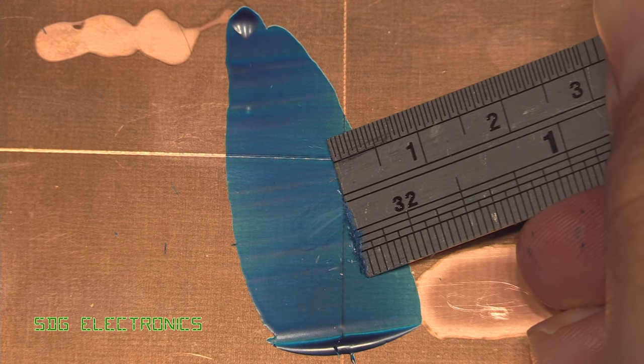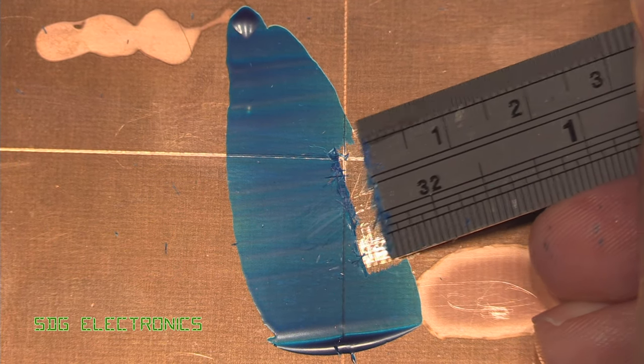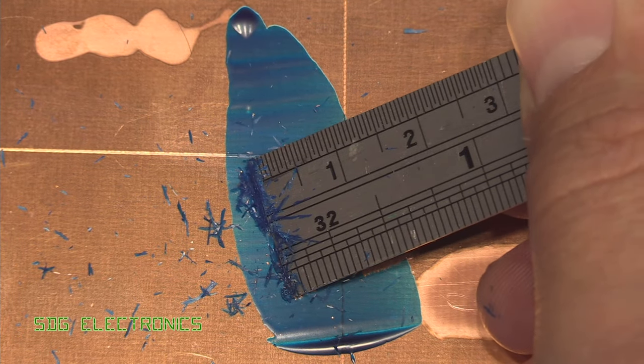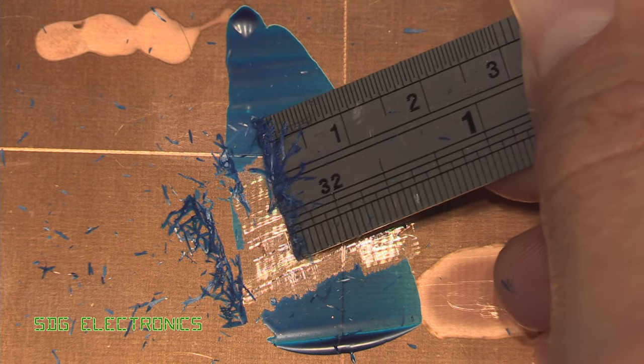And it does basically just chip off. That is pretty good. It needs quite a lot of force. So certainly as a solder mask repair it works really well.